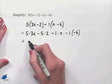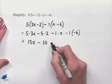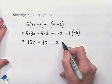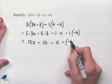Simplifying, 5 times 3x is 15x minus 5 times 2 is 10 minus 1 times x is x minus 1 times negative 6 is going to be a subtraction of negative 6.